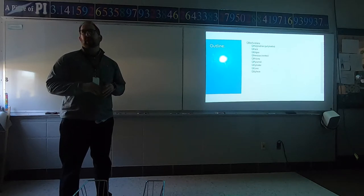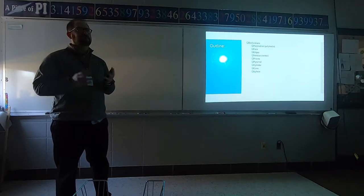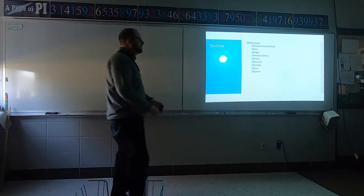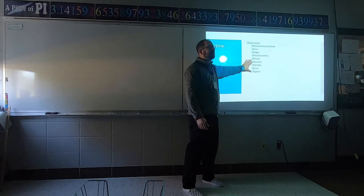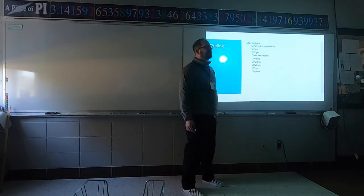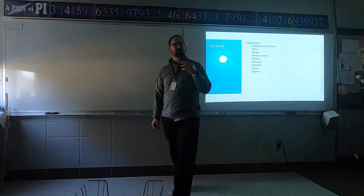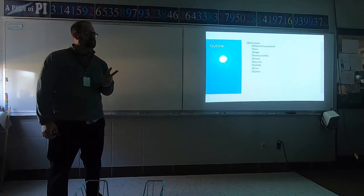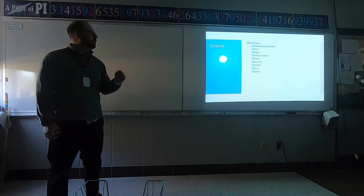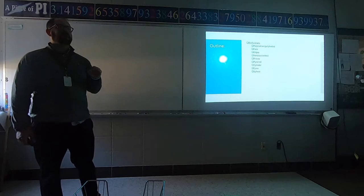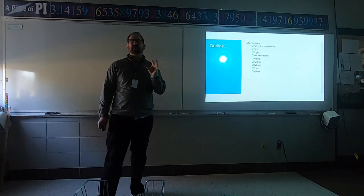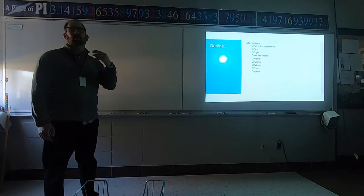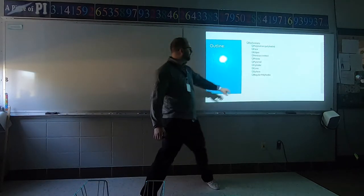Polyhedra have straight edges; non-polyhedra don't — they have curves. Those are things like cones. This is a massive undertaking. Today we'll probably just look at the basic definition of a polyhedron. Our main focus is to define what it is, then go into specific types and what we call regular polyhedra.